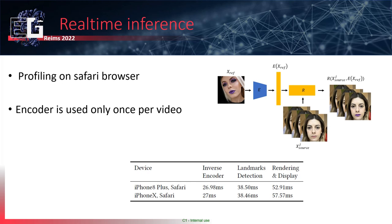We also benchmarked the real-time inference capabilities of our method, profiling it on Safari browsers and on iPhones. As shown in the figure, the encoder is used only once per video. The table gives rendering time per frame: our encoder runs at 27 milliseconds per frame, landmark detection at 38 milliseconds, and rendering and display between 52 and 57 milliseconds. This shows that our method can run in real-time, enabling real-life applications.